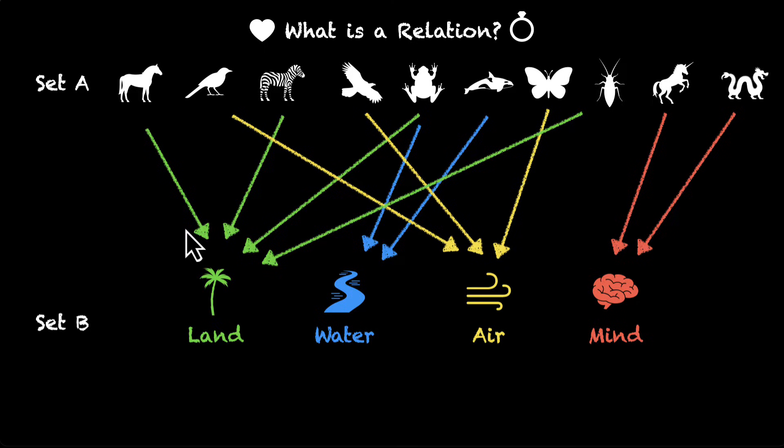all the arrows that we have, each of them is an ordered pair. If we combine all of them and put them in a set, that set is called a relation. That is a relation between the set A and set B or from set A to B.